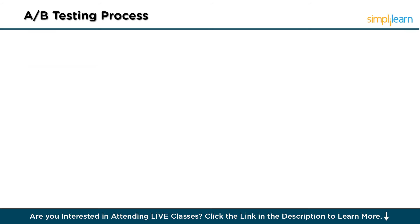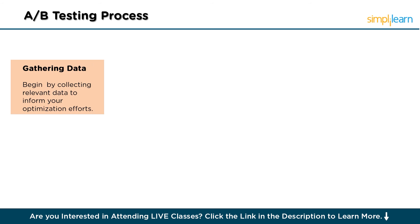Now let's understand the A-B testing process. The first step is gathering data. Begin by collecting relevant data to inform your optimization efforts. Utilize tools like Google Analytics to identify potential areas of improvement on your website or app. Focus on pages with high traffic and look for patterns such as high exit rates, which may indicate opportunities for enhancement. Additionally, gather insights from heat maps, social media feedback, and user surveys to uncover new optimization prospects.